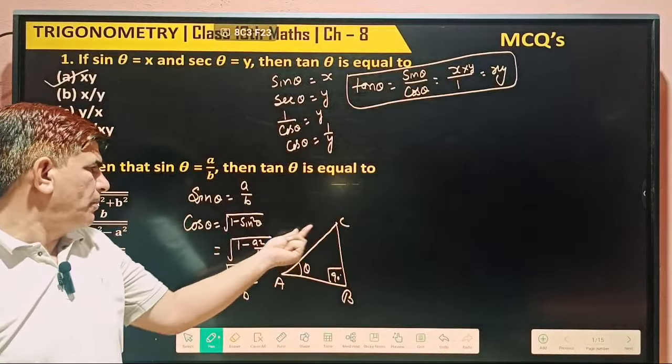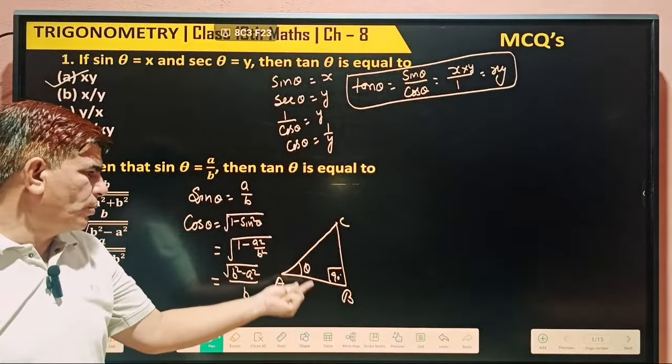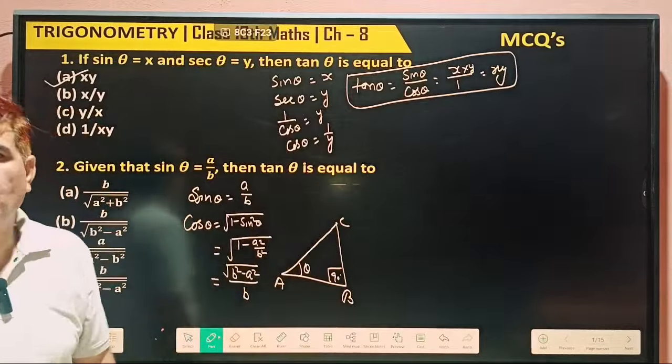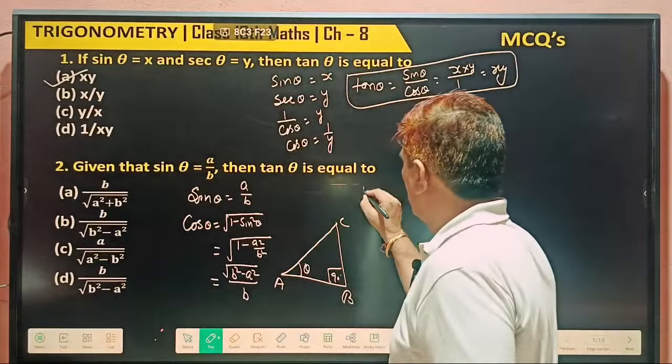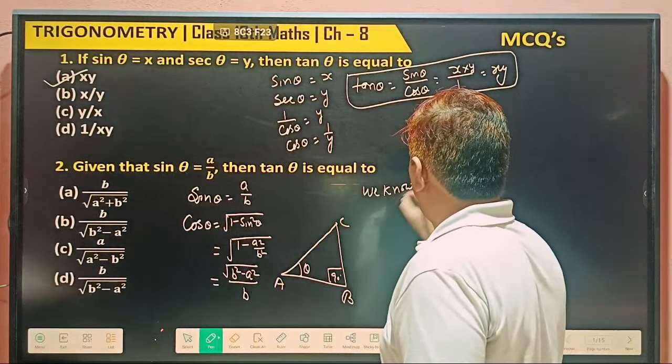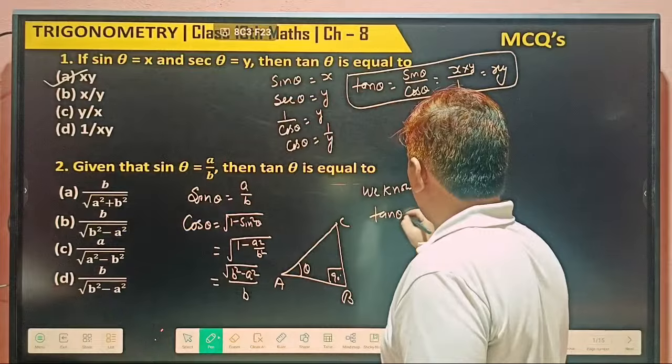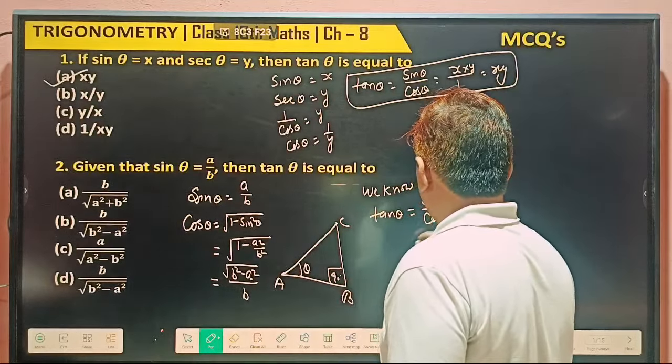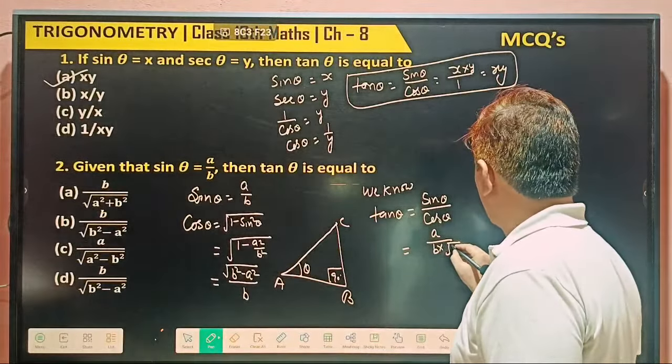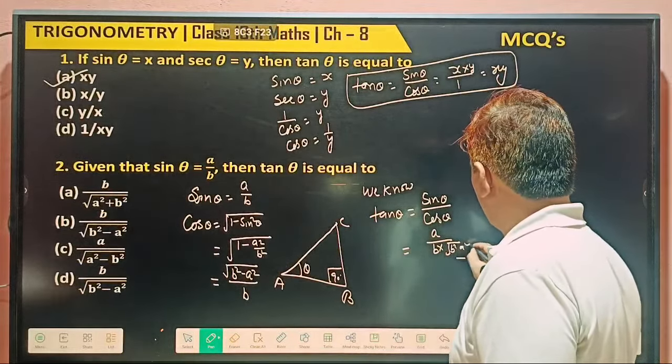Perpendicular is a, base is this, hypotenuse is this. So base is b square minus a square under the root. Then also we can find out. So we know tangent θ is equal to sin θ by cos θ. So what's your sin θ? a by b into cos θ under the root b square minus a square.